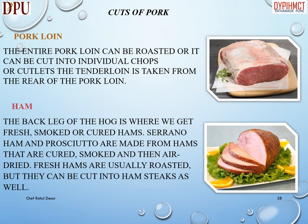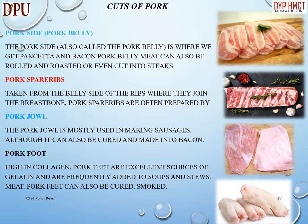Ham: the back leg of the hog is where we get fresh, smoked, or cured hams. Serrano ham and prosciutto are made from hams that are cured, smoked and then air dried. Fresh hams are usually roasted but can be cut into ham steaks as well. Pork belly: the pork side, also called the pork belly, is where we get pancetta and bacon. Pork belly meat can also be rolled and roasted or cut into steaks. Pork spare ribs are taken from the belly side of the ribs where they join the breastbone. The pork jowl is mostly used in making sausages, although it can also be cured and made into bacon.